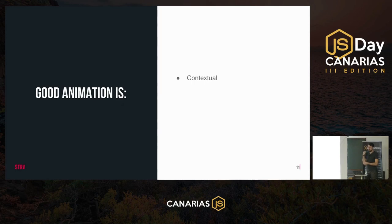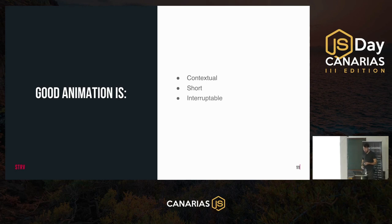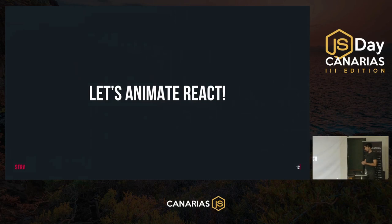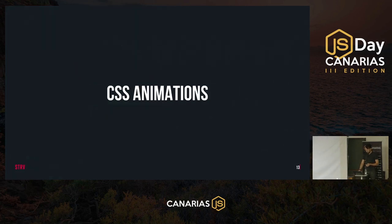In this talk we're going to talk about designing and developing such animations. First we need to define what a good animation actually is. A good animation is contextual — it helps explain things in context and shouldn't be meaningless or distracting. It should be short so it doesn't prevent users from performing their actions; animations of 300 milliseconds or less are usually preferred. It should be interruptible — if we transition from one page and the user clicks back, we don't want to wait for the whole animation to finish. And finally, animation should be performant, because poor performance impairs UX instead of improving it.